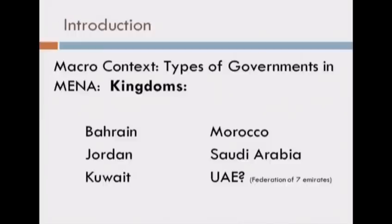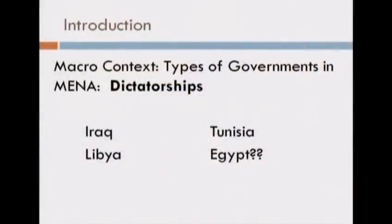Of course the United States and Saudi Arabia and Kuwait and UAE have very good relationships. One word, three letters: oil. How about dictatorships? There's Iraq, Libya, Tunisia, and Egypt. Wait — Tunisia? The president of Egypt was elected? No, I'm calling this guy a dictator — he's been in office too long.